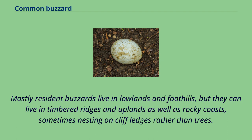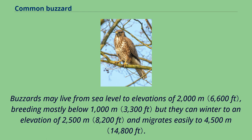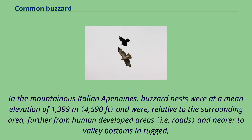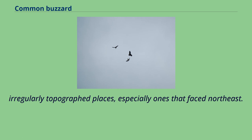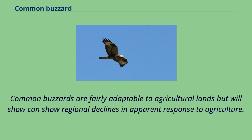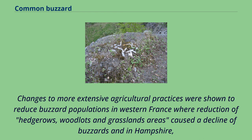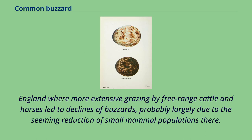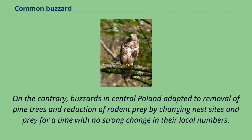Buzzards may live from sea level to elevations of 2,000 meters, breeding mostly below 1,000 meters, but they can winter to an elevation of 2,500 meters and migrate easily to 4,500 meters. In the mountainous Italian Apennines, buzzard nests were at a mean elevation of 1,399 meters and were, relative to the surrounding area, further from human-developed areas and nearer to valley bottoms and rugged, irregularly topographed places, especially ones that face northeast. Common buzzards are fairly adaptable to agricultural lands but will show regional declines in response to agriculture. Changes to more extensive agricultural practices reduced buzzard populations in western France, where reduction of hedgerows, woodlots and grassland areas caused a decline, and in Hampshire, England, where more extensive grazing led to declines, probably due to reduction of small mammal populations.